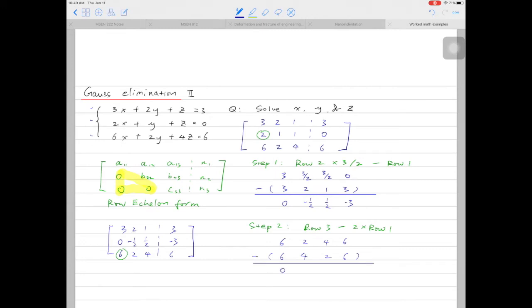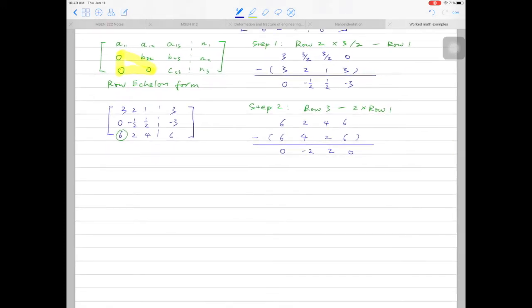Doing the subtraction, we have 0, minus 2, 2, and 0. Now rewrite the new matrix. Row 1 and row 2 will be the same as the previous one. Row 3 will be new.